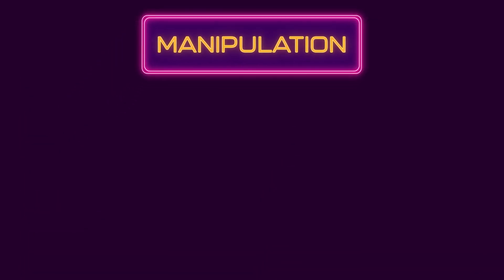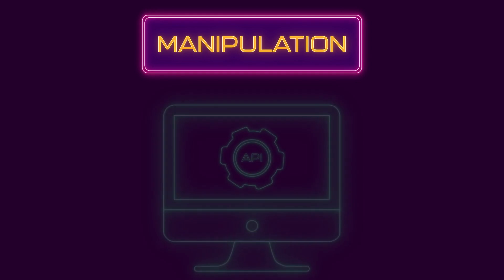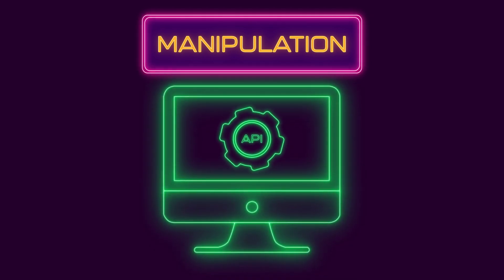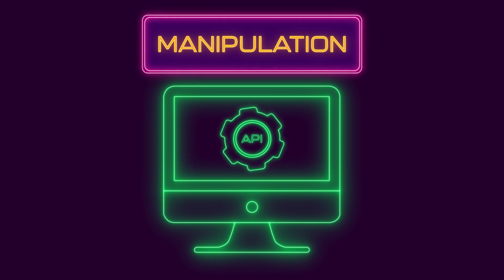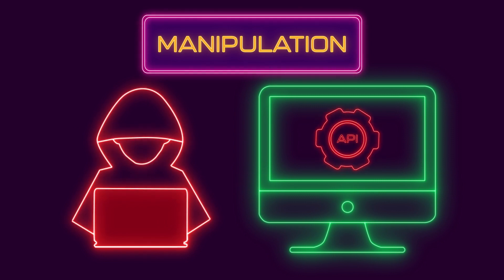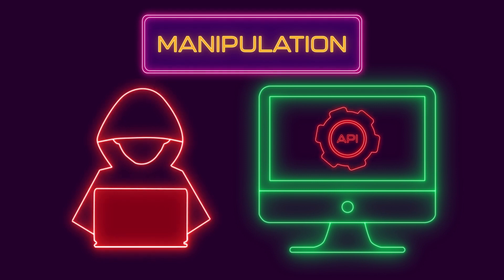Manipulation: similarly, make sure your API functions, objects, and properties cannot be created, modified, or deleted without proper access to do so. Giving threat actors access to manipulate the data in your API is a major risk and can be easily exploited with a combination of attacks.